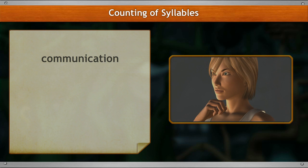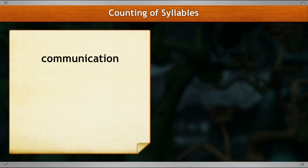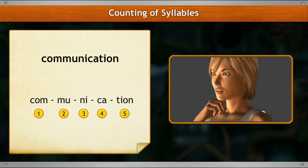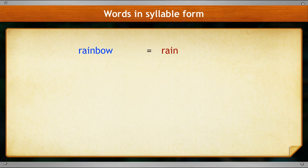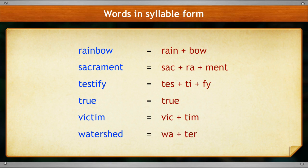Let's try out another method to count the number of syllables in a word. Take the word 'communication' as an example. Keep your fist under the chin and read out the word. Count the number of times the chin touches the fist when pronouncing it: co-mu-ni-ca-tion. We observe that there are five syllables in the word communication. Here are a few more examples: rainbow, sacrament, testify, true, victim, watershed.